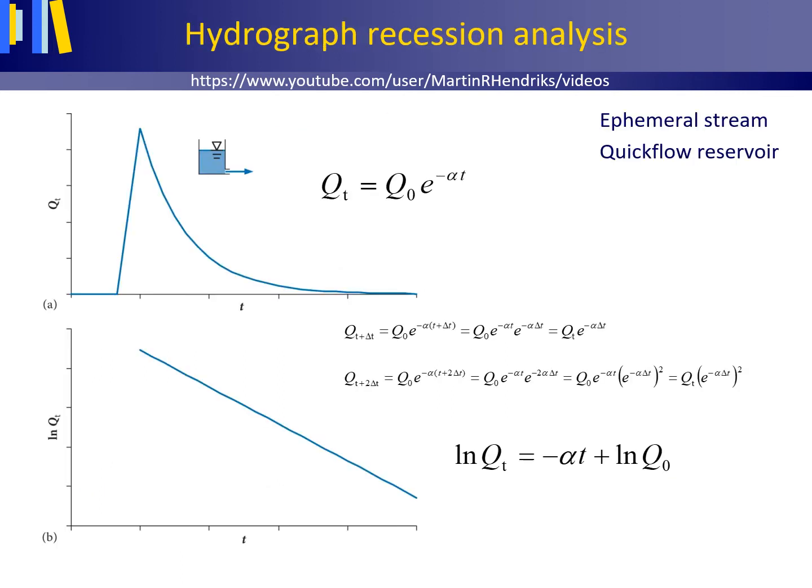Streams that hold water throughout the year are called perennial, whereas a channel that only holds water during and immediately after a rain or snowmelt event is called ephemeral. An ephemeral stream thus has no base flow, only quick flow.